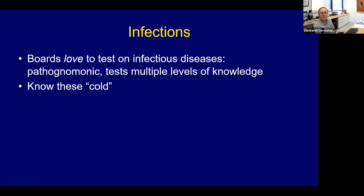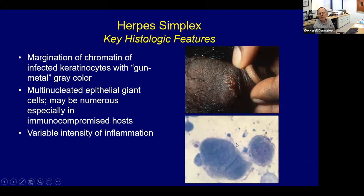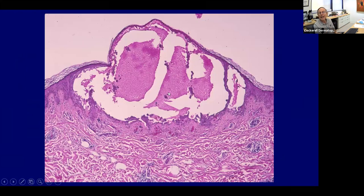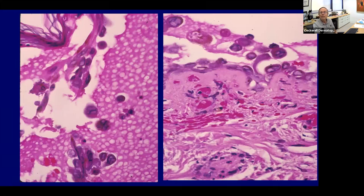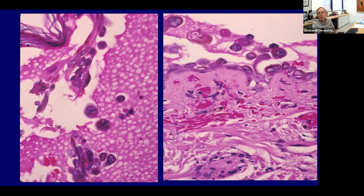Let's start talking about infectious agents — the boards love these because they're pathognomonic and can test multiple levels of knowledge. Herpes simplex infection: you need to know what these look like — the Tzanck smear, multi-nucleated giant cells with margination of chromatin. Clinically you get herpetic clustered vesicles on an erythematous base. On biopsy, you'll see acantholytic cells with viral cytopathic effect floating freely in the blister space, and multi-nucleated cells with chromatin pushed to the margin of the nucleus.